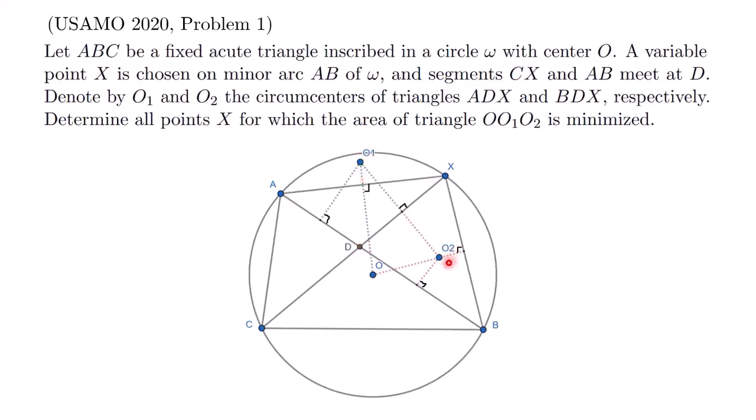O1 and O2 are the circumcenters of triangles ADX and BDX. In this diagram, I have put in the three perpendicular bisectors to produce the point O1, and notice that the perpendicular bisector of AX actually passes through O. Similarly, I have put in the three perpendicular bisectors of the triangle to produce the point O2, and the perpendicular bisector of BX passes through O.